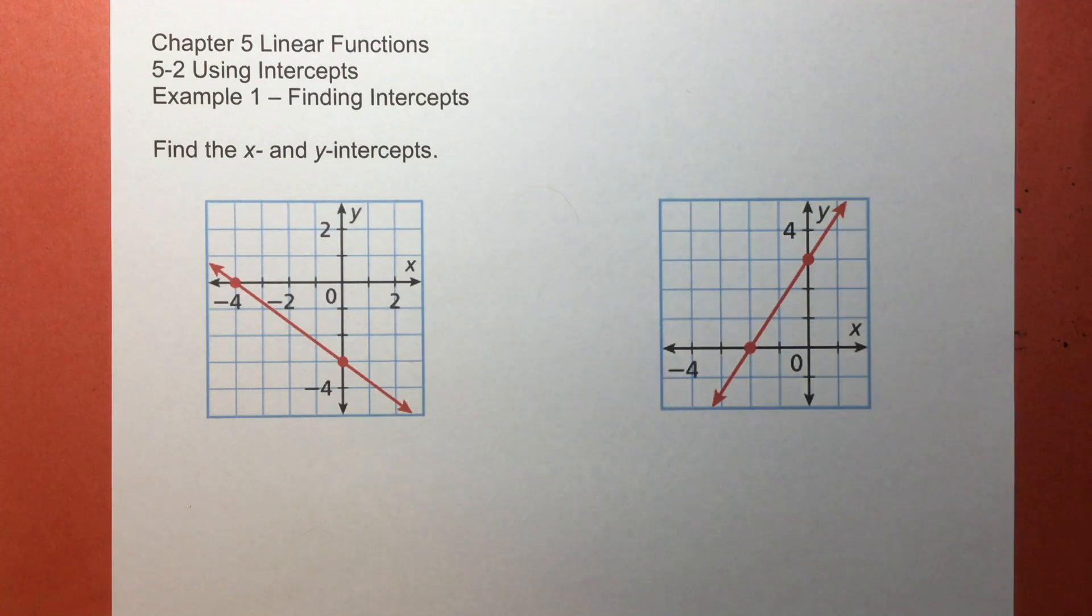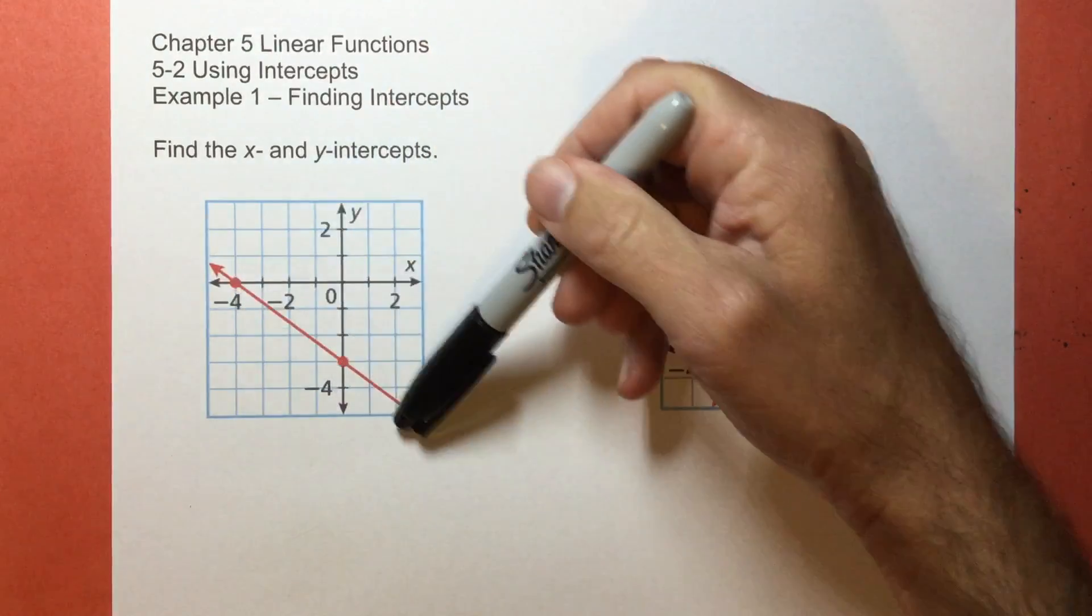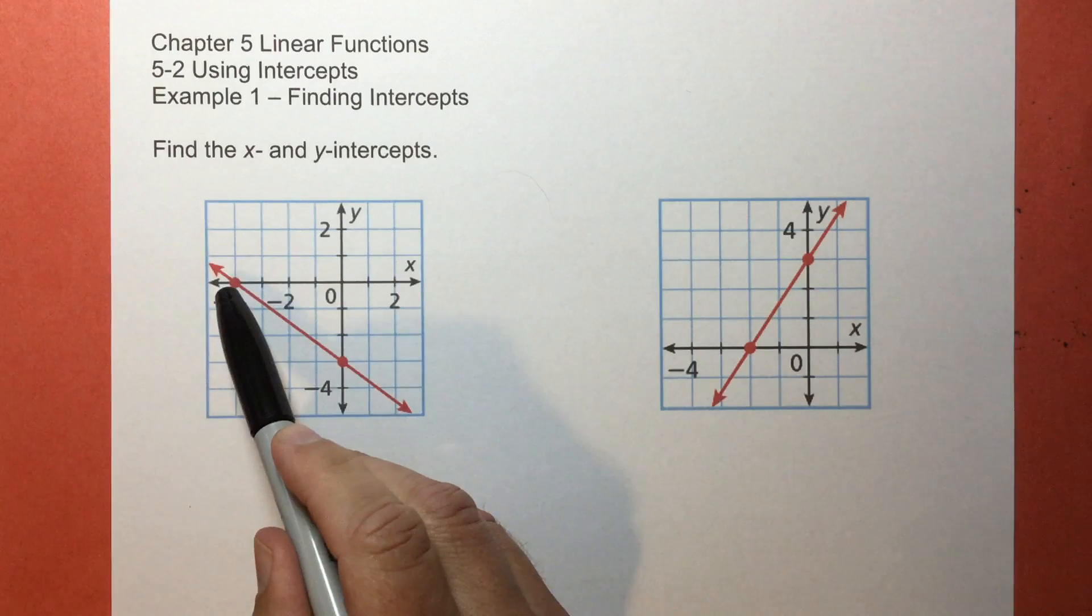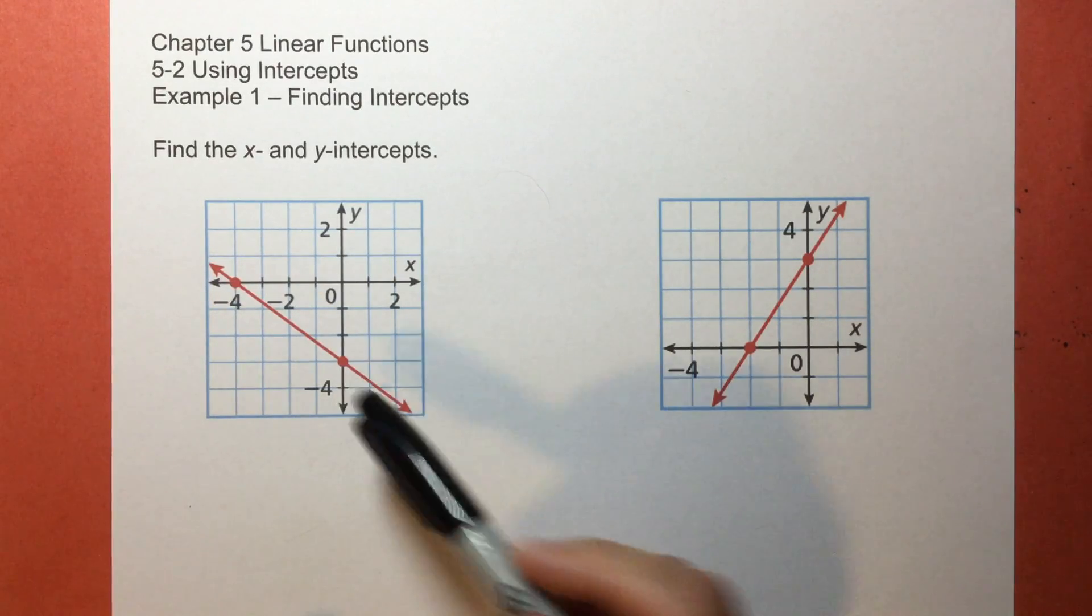So what I mean by an intercept? Well, to intercept means to cross something, to come in contact with it, to cross paths. So we use the word intercept in algebra for where our graph, which is the red line right here, is going to come in contact with either the x-axis or the y-axis.